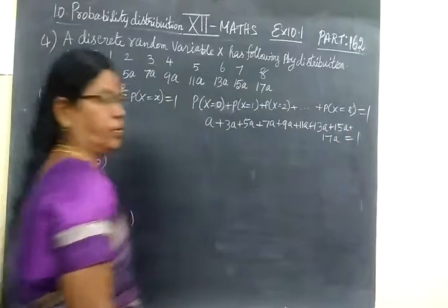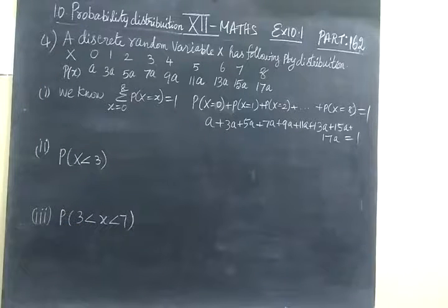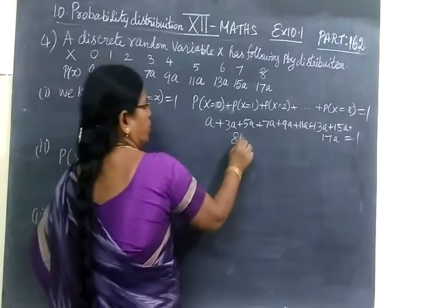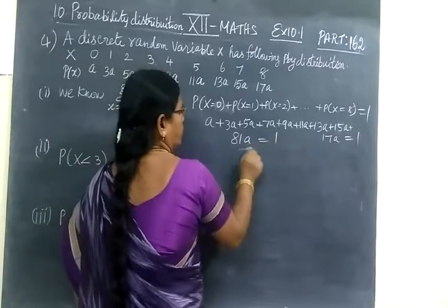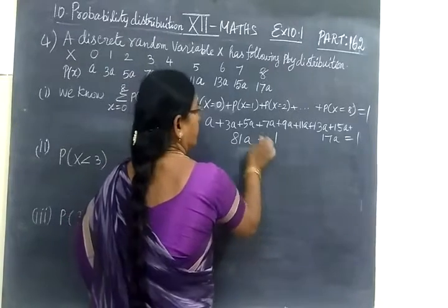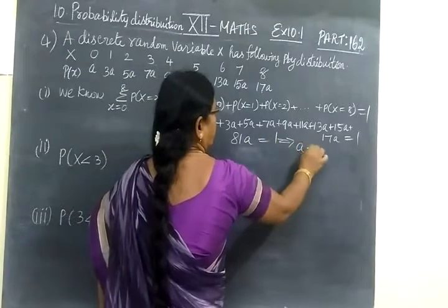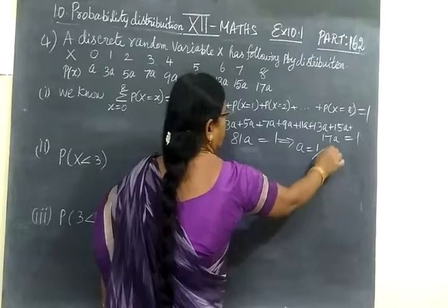That is equal to 1. Now by adding all these values, you are getting 81A equal to 1. So this implies A equal to 1 by 81.